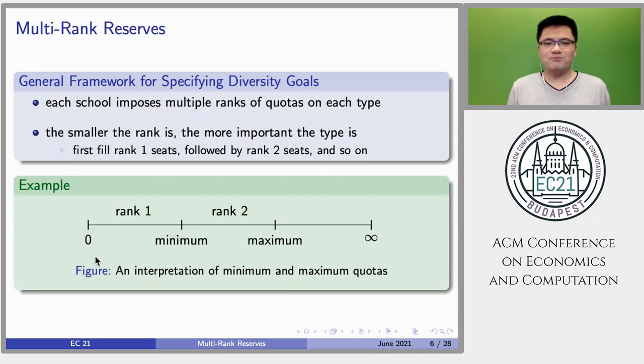In this work, we consider a more general and flexible framework to specify diversity goals. Instead of setting minimum and maximum targets, we allow each school to specify multiple ranks of quotas for each type. These ranks are used to measure the importance of diversity goals. The smaller the rank is, the more important the type is.